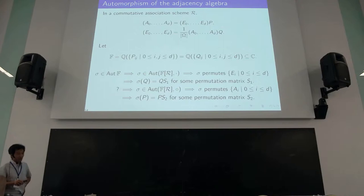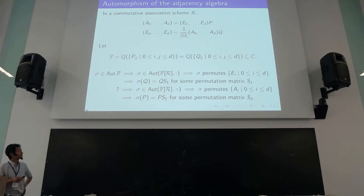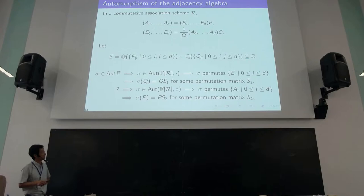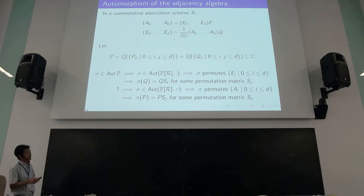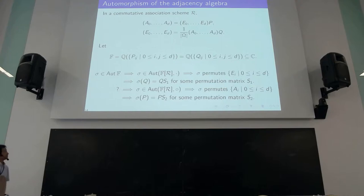Now, the adjacency matrices are also a basis — they are the primitive idempotents with respect to entry-wise multiplication. So if sigma, in some sense, induces an automorphism of the entry-wise product algebra, then sigma permutes the adjacency matrices. If sigma permutes adjacency matrices, it results in column permutation of the first eigenmatrix. However, it's not clear how sigma could induce an automorphism that preserves the entry-wise product, because if you apply sigma entry-wise, it acts trivially on zero-one matrices — which is not what we want.